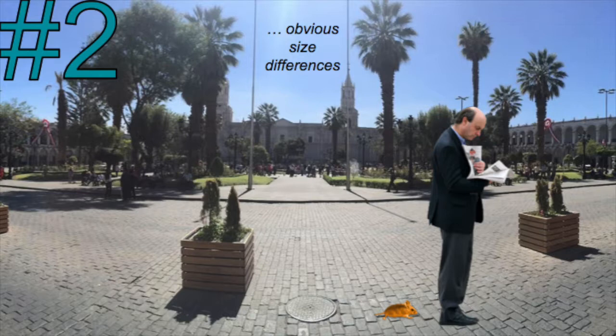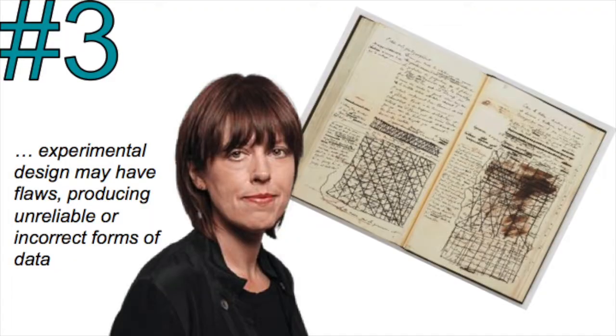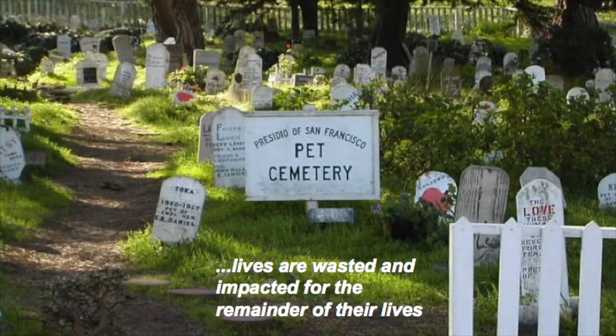This is a difference in mass by a factor of over 3000. Another reason against animal testing is that an experimental design may have flaws, producing unreliable or incorrect forms of data. If the test involved an animal model, their lives are wasted and impacted for the remainder of their lives.